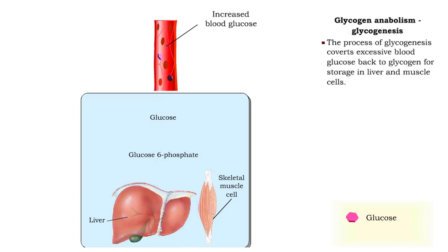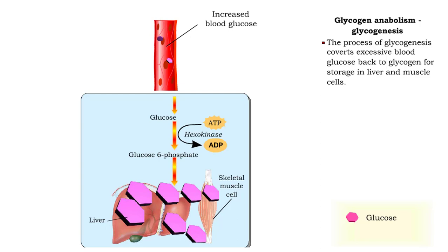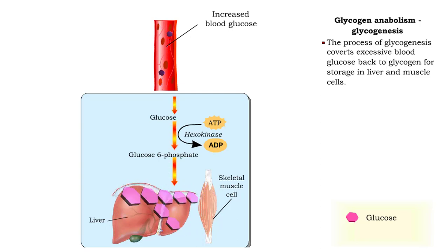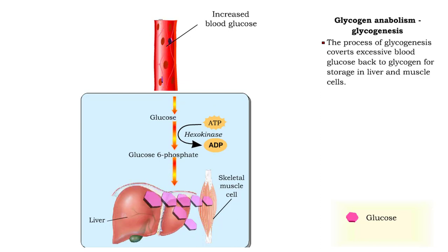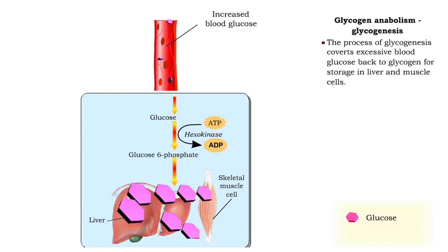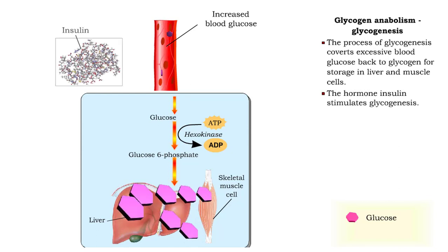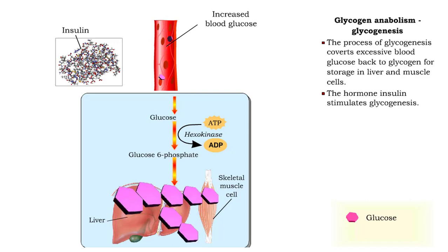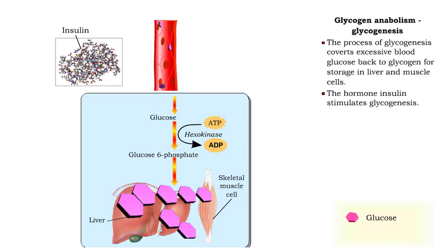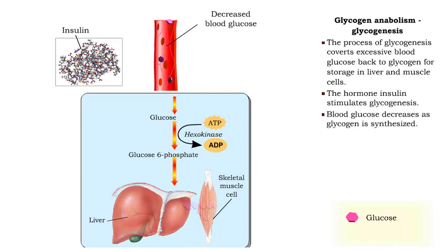Through the process of glycogenesis, excessive blood glucose can be converted back to the polysaccharide glycogen for storage in liver and muscle cells. Glycogenesis is stimulated by the hormone insulin. As the glycogen is synthesized, blood glucose will decrease.